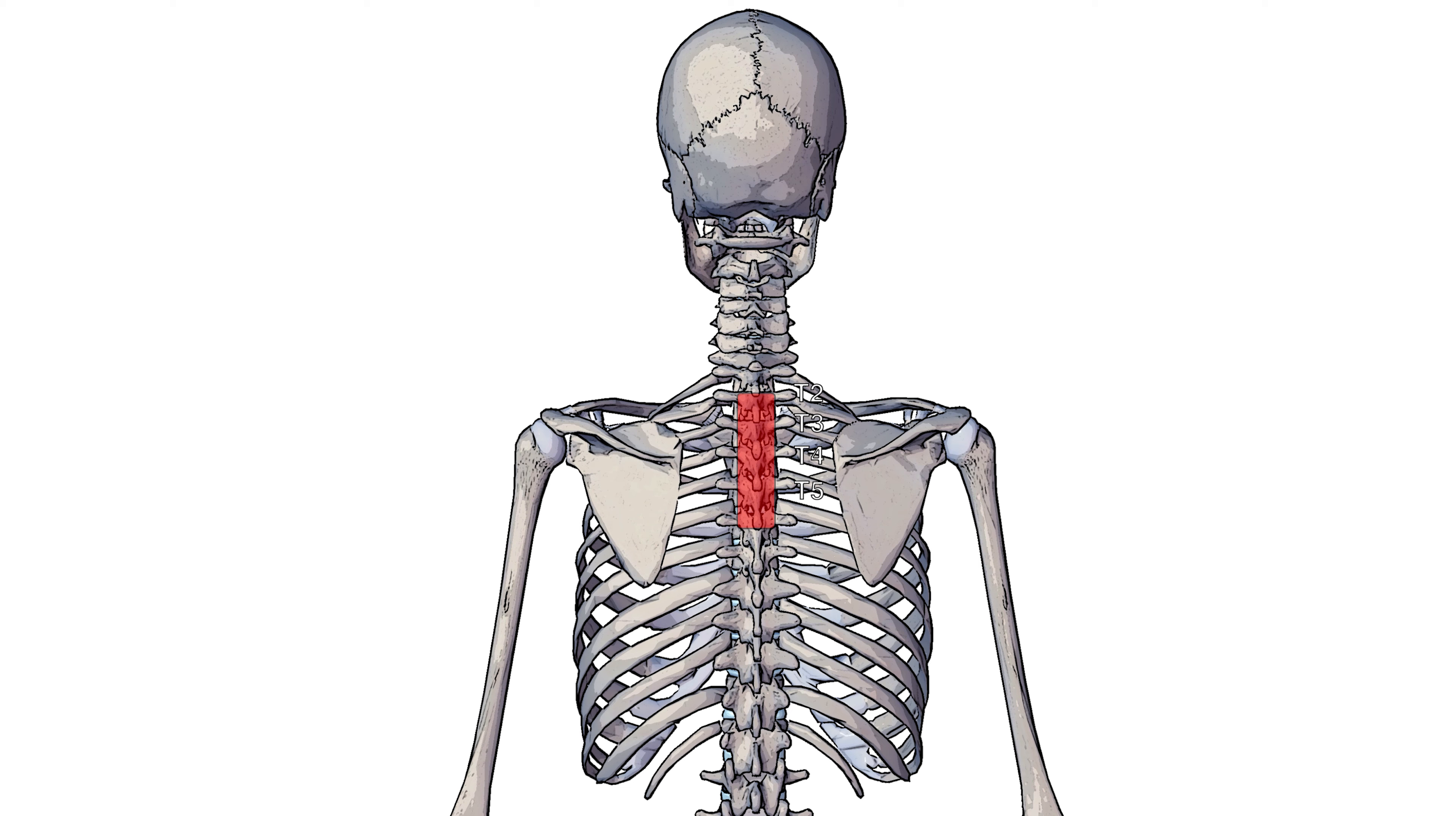The origin of the rhomboid major muscle is on these spinous processes of T2 to T5 of the vertebrae, so T meaning the thoracic vertebrae. The spinous processes are, if you see on the back of each vertebrae, it's got a little part that sticks out and these little bits that stick out on the back are the spinous processes.